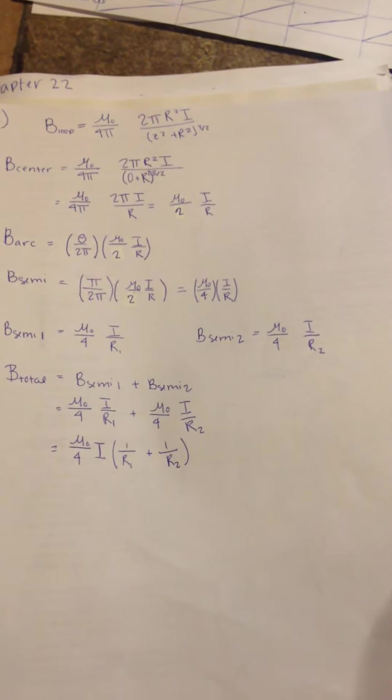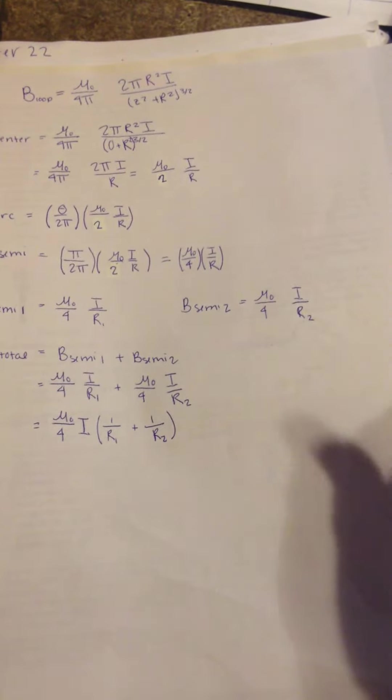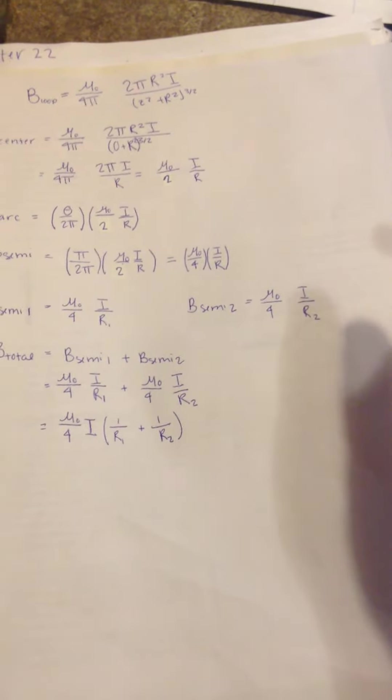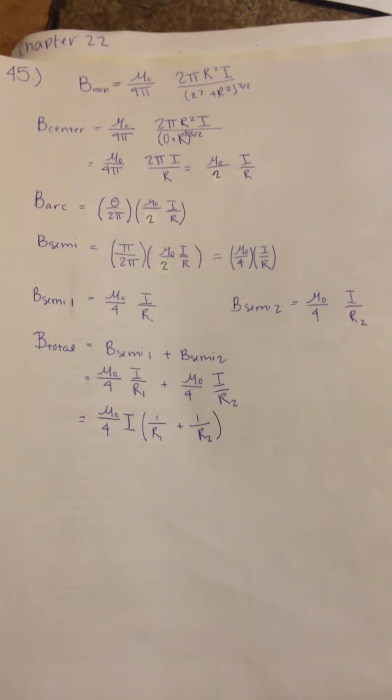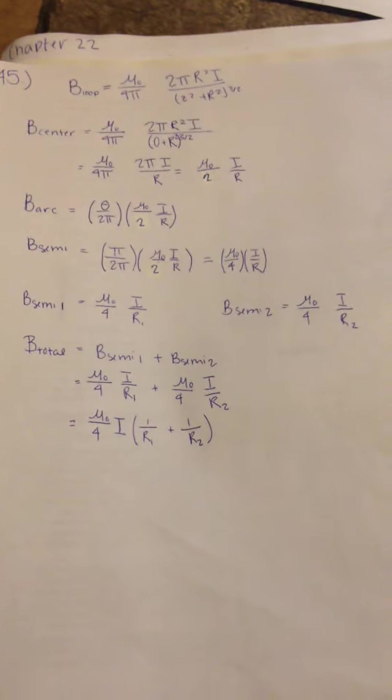And I believe that is it. Oh, we do know that the conventional current is going to be clockwise, and the magnetic field due to both sides is going to be into the page. And that's just found by the right-hand rule.